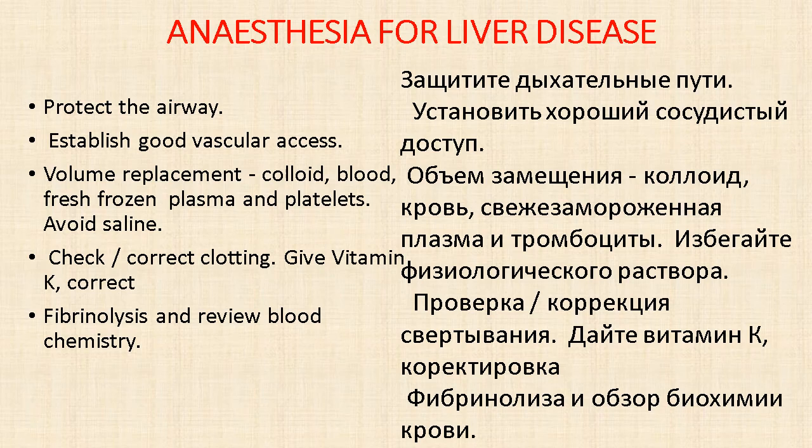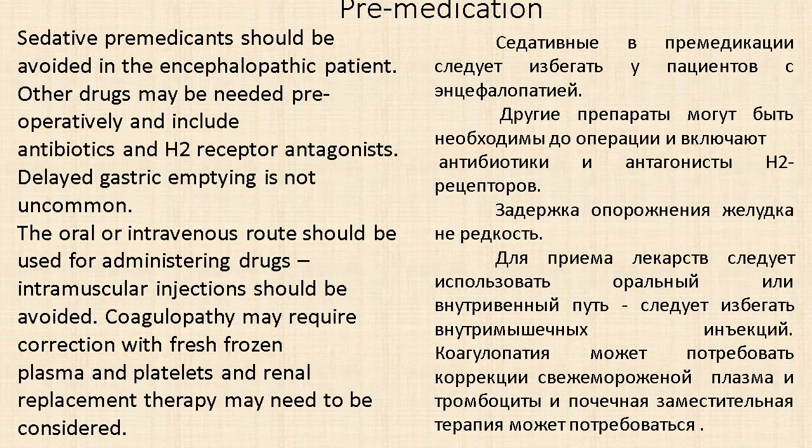For anesthesia in liver disease: protect the airway, establish good vascular access, volume replacement with colloid, blood, fresh frozen plasma and platelets. Avoid saline, check current clotting, give vitamin K, correct fibrinolysis, and review blood chemistry.